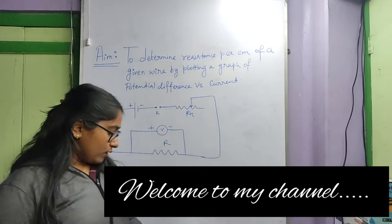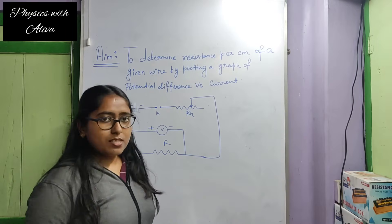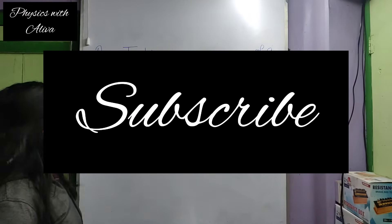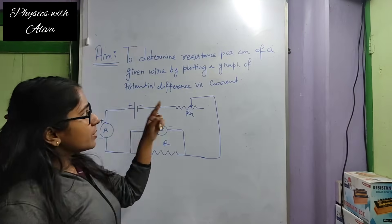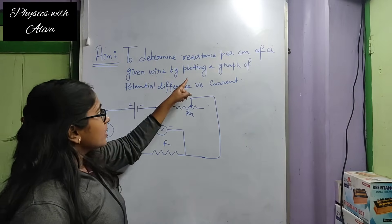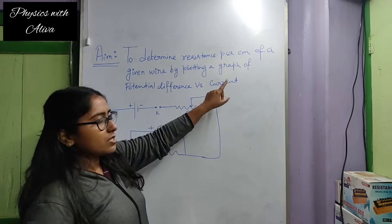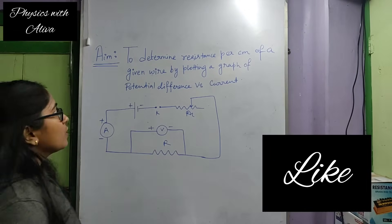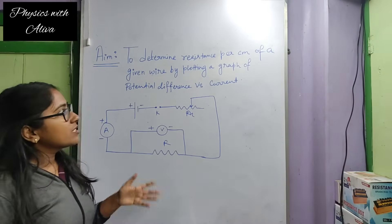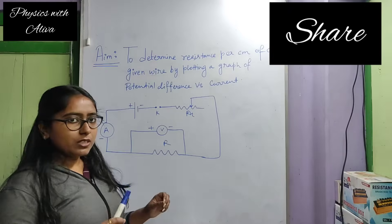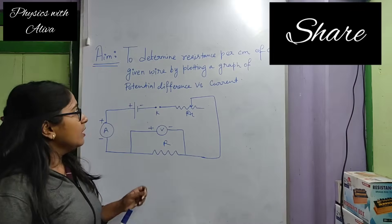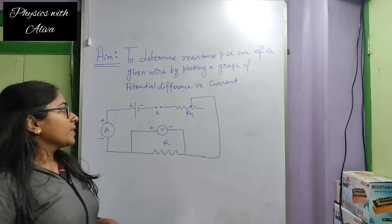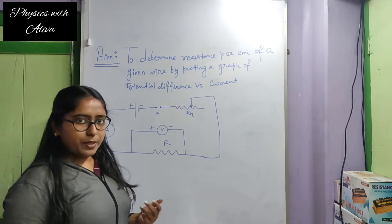Hello everyone. Today I am going to discuss this practical. The aim of the practical is to determine the resistance per centimeter of a given wire by plotting a graph of potential difference versus current. Our aim is to determine the resistance per unit length of a given resistance wire by plotting a graph of potential difference versus current. So let's start the practical.